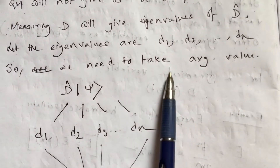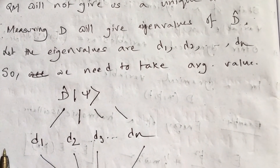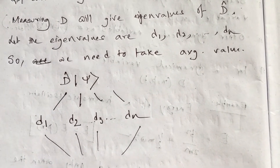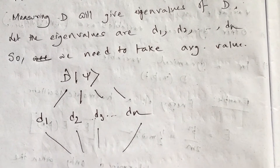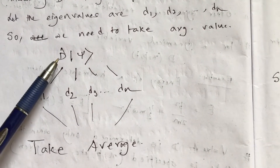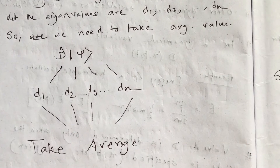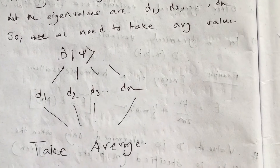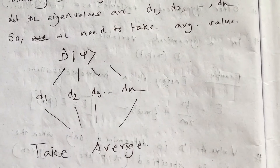Suppose I get many answers like d1, d2, d3 up to dn. So we need to take the average value of all these values d1, d2, d3, dn, etcetera. Basically, measuring d in quantum mechanics means we operate this dynamical variable on the arbitrary state ψ, and that will give me d1, d2, d3, d4 up to dn — so many values. We need to take the average of all these d values.